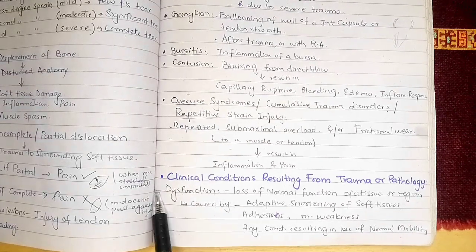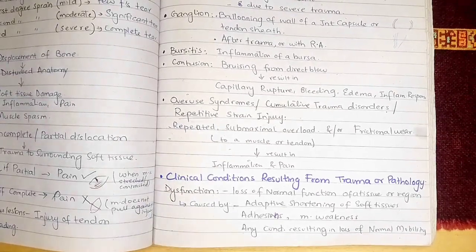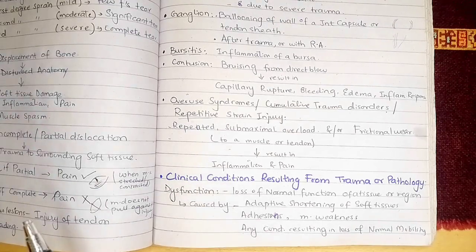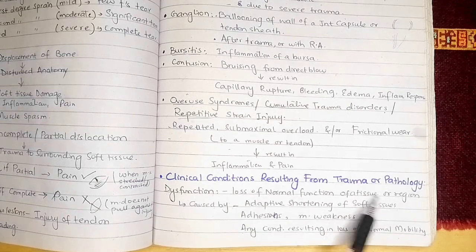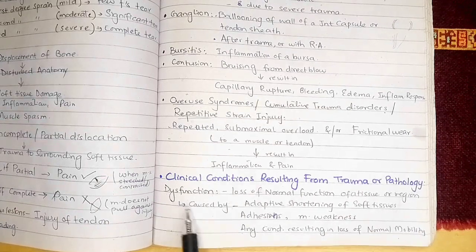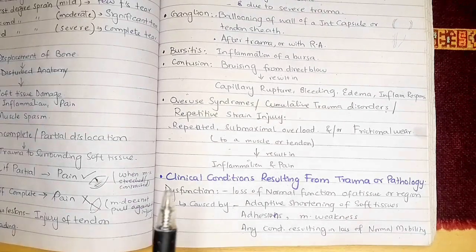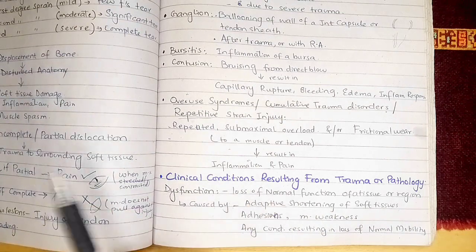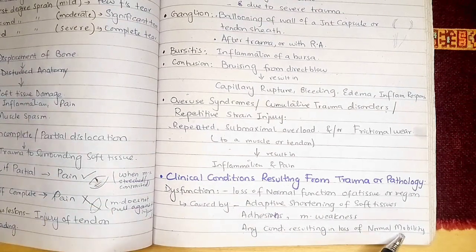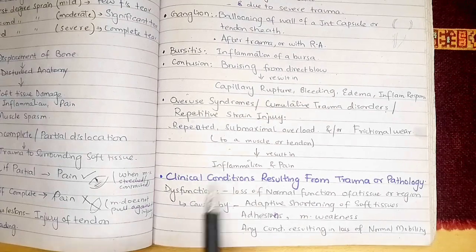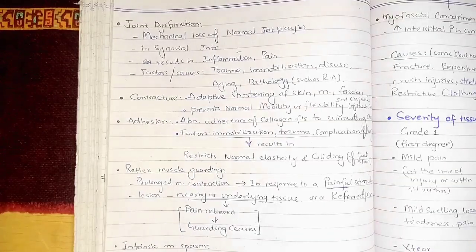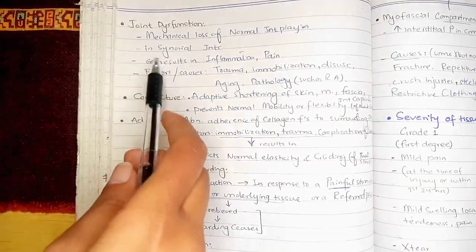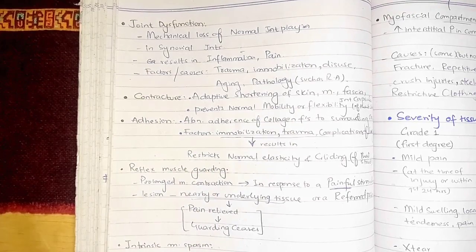First we have dysfunction. Dysfunction — 'dys' means bad — so this is basically the bad function, or the loss of the normal function of a tissue or region. It is caused by adaptive shortening of soft tissue, adhesions, and muscle weakness. Any condition that results in the loss of normal mobility can also contribute to dysfunction. Then we have joint dysfunction, which is a specific term referring to joints only.